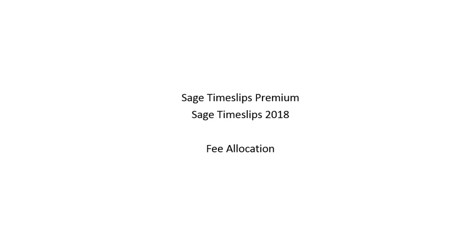Timeslips provides fee allocation features that help you compensate your employees according to income received by your firm. In previous versions of Timeslips, you could establish up to three timekeeper categories for fee allocation. You can now establish up to ten timekeeper categories.